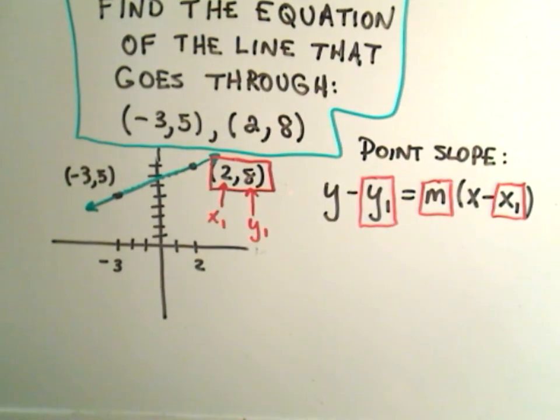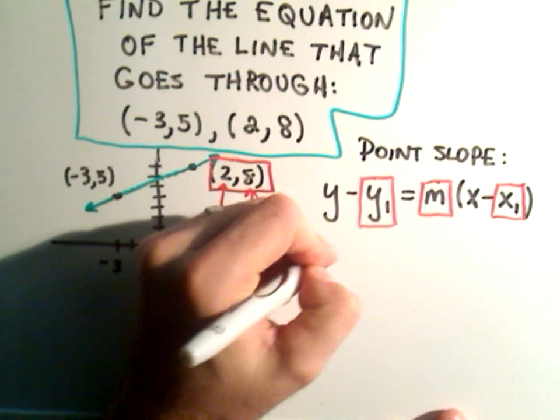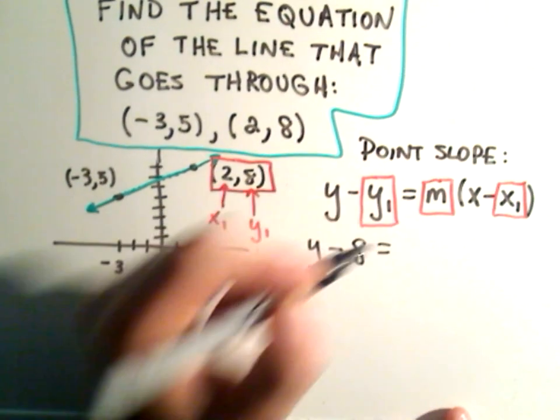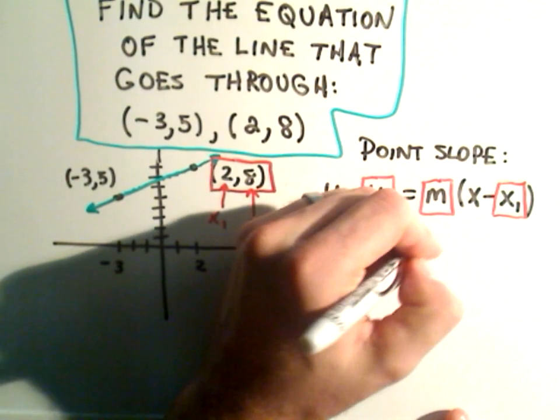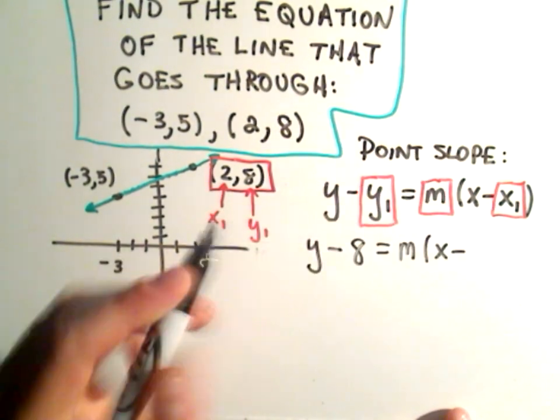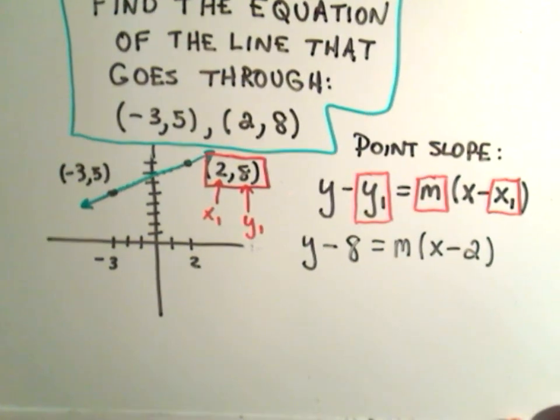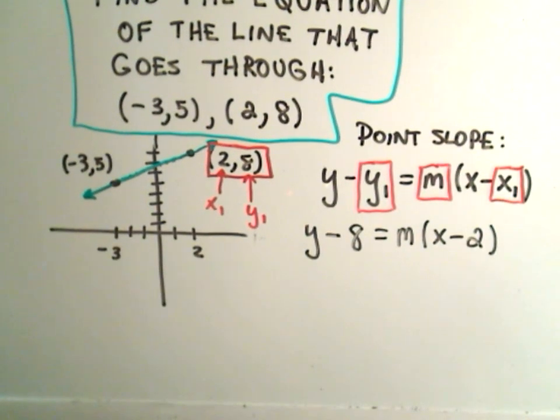So I know that I'll get y minus the y-coordinate, which is 8. I'll have to calculate the slope still. x minus the x-coordinate, which is just 2. Okay, so I've almost got the equation of my line already. The only thing I'm missing is the slope.